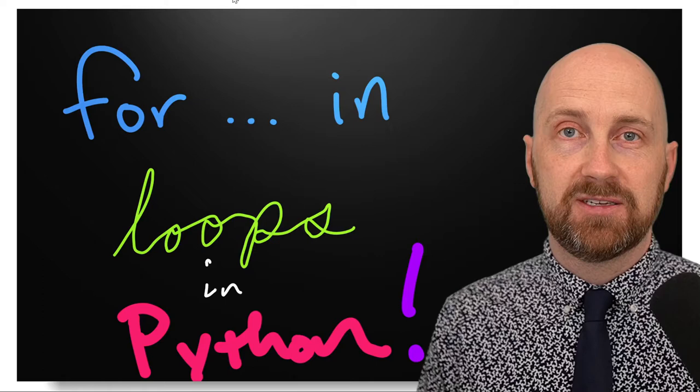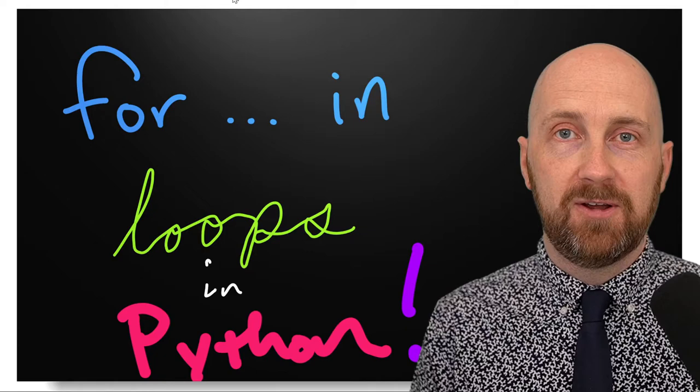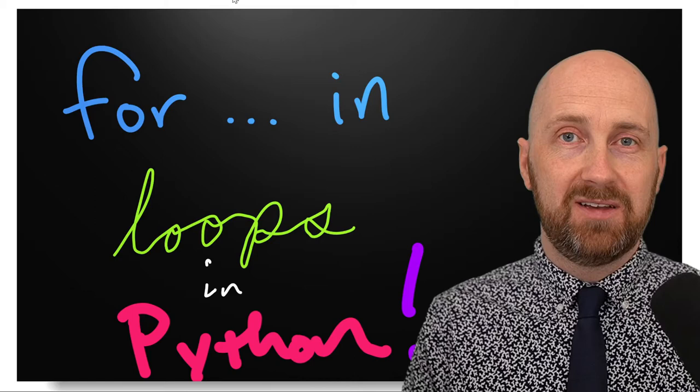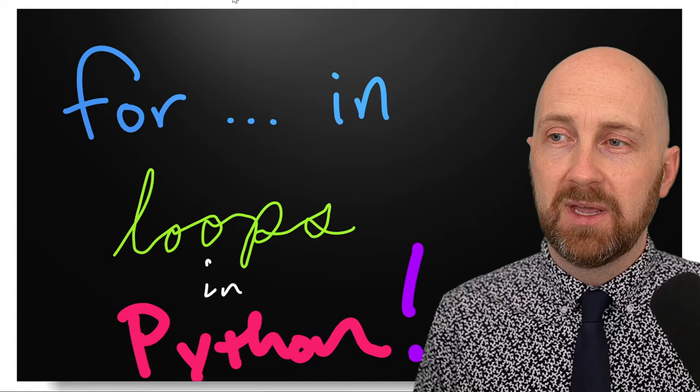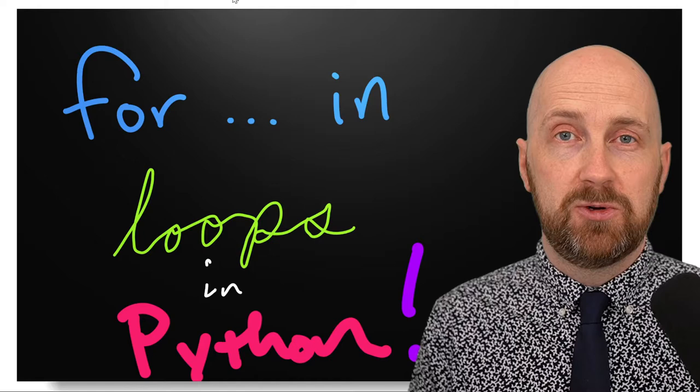Writing programs with loops or iteration is such a common task that there are many different kinds of loops in just about every programming language. The most fundamental kind is the while loop, which we've already looked at in a previous video. There's a certain pattern of the while loop that is so common that Python and other languages have adopted a special syntax for it — called a for loop or a for-each loop.